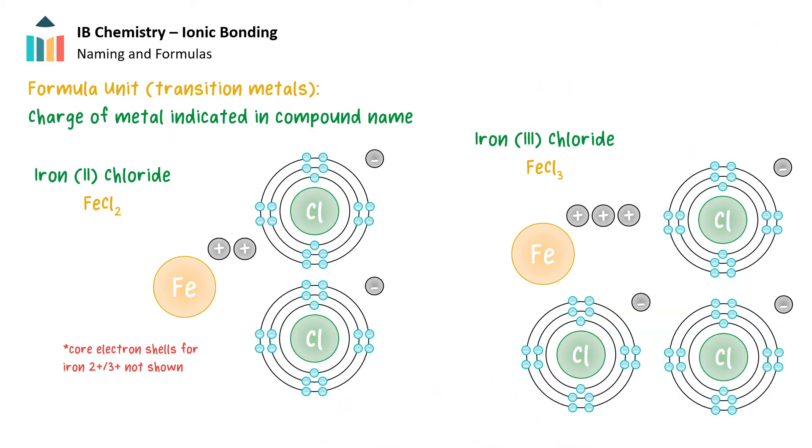When an ionic compound contains a transition metal, the gain or loss of electrons is a bit more complex due to electrons in the d orbitals. Transition metals can have multiple oxidation states, which is reflected in the compound name.